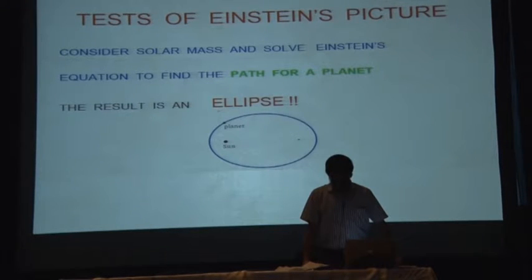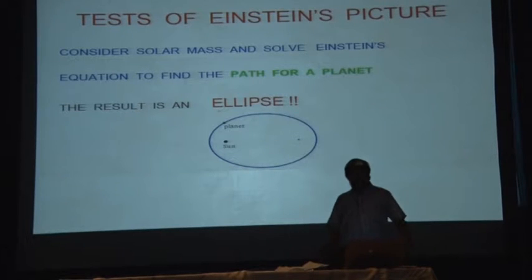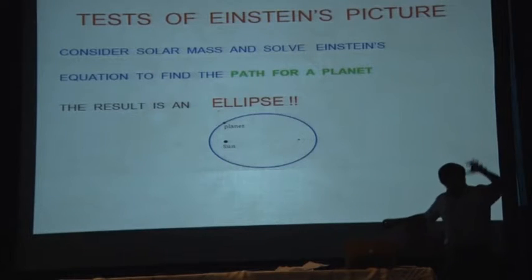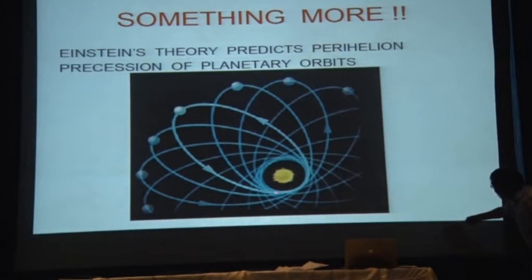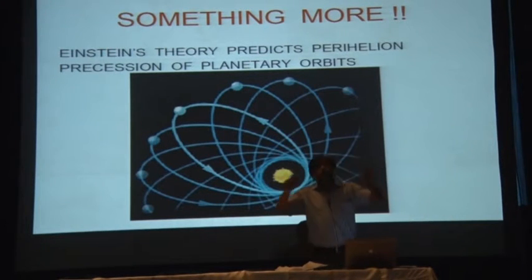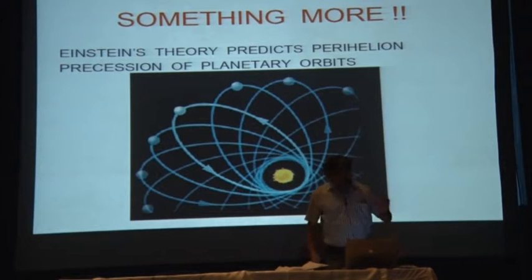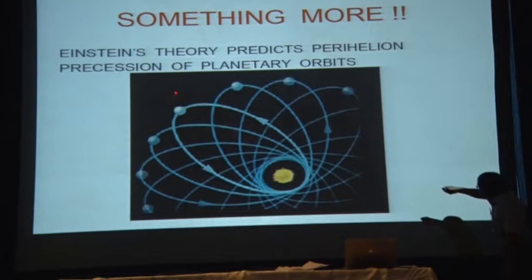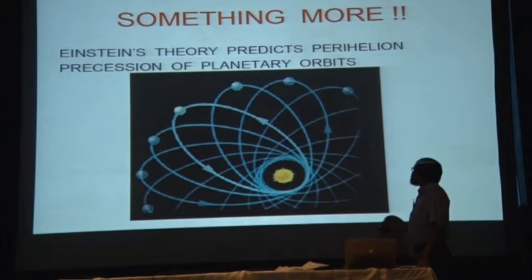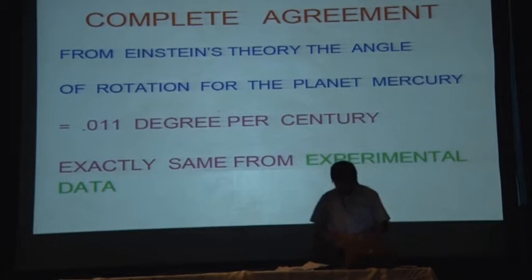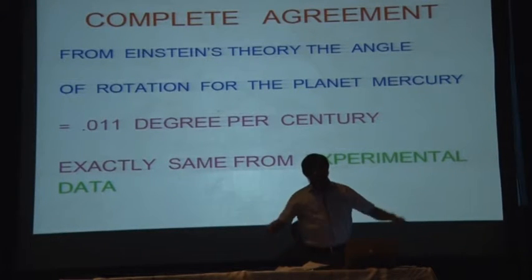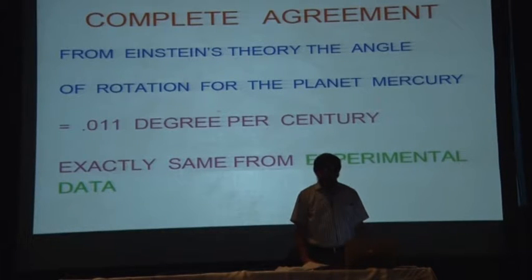According to Newtonian gravitational theory, this ellipse should be fixed in space. But according to Einstein, the major axis of the ellipse gradually tilts — it rotates — which would not happen in the Newtonian case. Einstein's clear statement was that by space-time curvature, this ellipse is not fixed but rotates. It was experimentally tested: from Einstein's theory, the angle of rotation for the planet Mercury was 0.011 degrees per century, which exactly matched experimental data. We conclude that Einstein's description of space-time curvature is absolutely accurate.